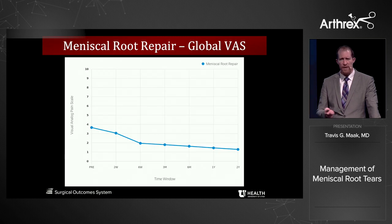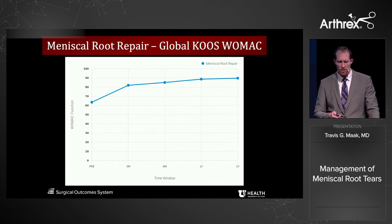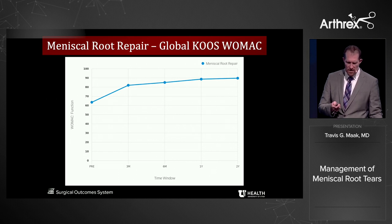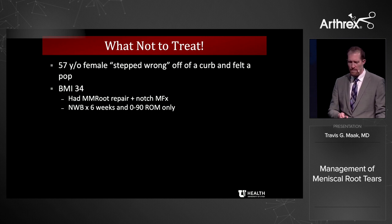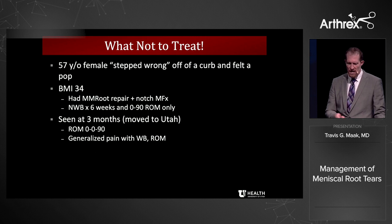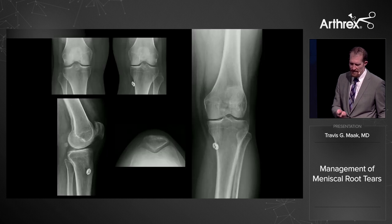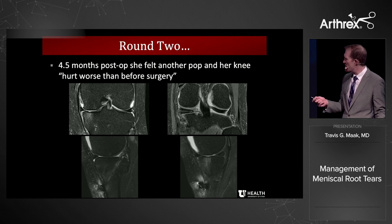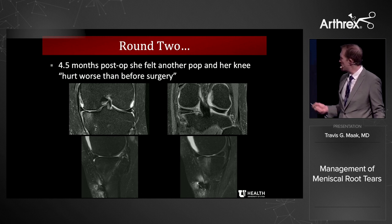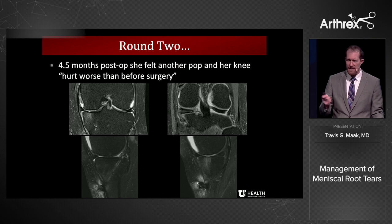How do these patients do? We can rely on our SOS data: meniscal root repairs demonstrate improvement in global VAS scores as well as KOOS and WOMAC scores across the board at reasonably long-term follow-up. That said, consider this patient — a 57-year-old female with a BMI of 34 who had a root repair with notched microfracture and was non-weight-bearing for six weeks. She later returned not feeling better. Her x-rays showed medial joint space narrowing and early osteophyte formation. Her MRI demonstrated medial plateau overload, chondral damage on the tibia, and a complete rupture of her medial meniscal root repair. I would suggest this probably should not have been repaired in the first place — but we can debate that on the panel.